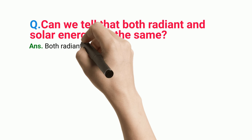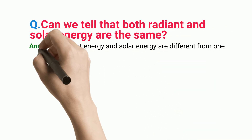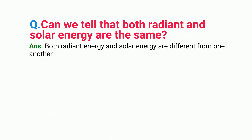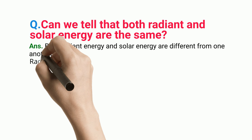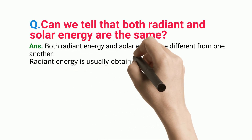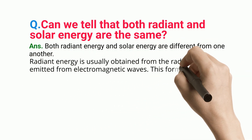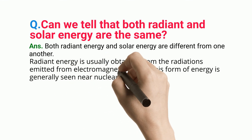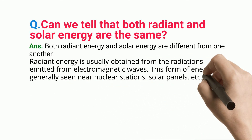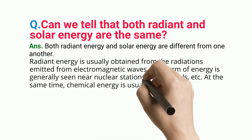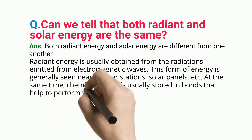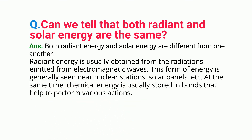Both radiant energy and solar energy are different from one another. Radiant energy is usually obtained from the radiations emitted from electromagnetic waves, and this form of energy is generally seen near nuclear stations, solar panels, etc. At the same time, chemical energy is usually stored in bonds that help to perform various actions.